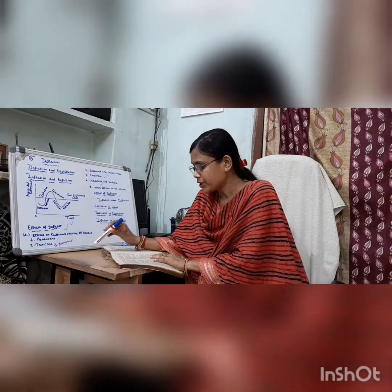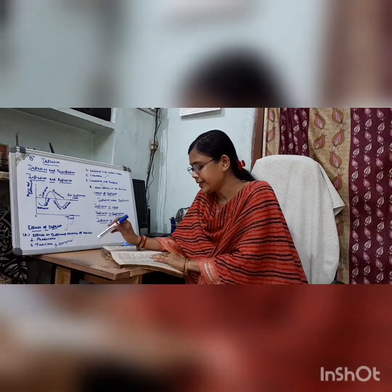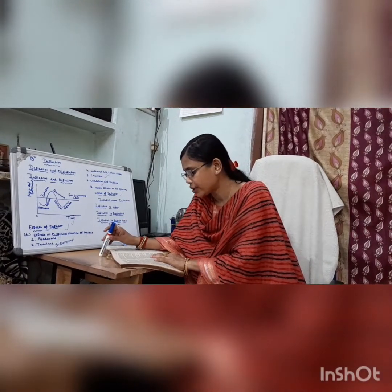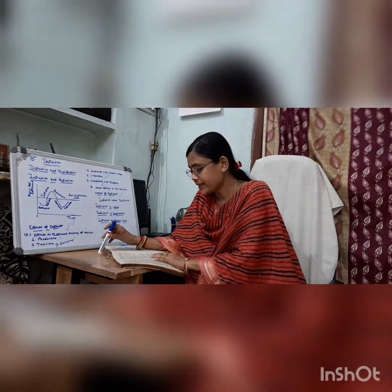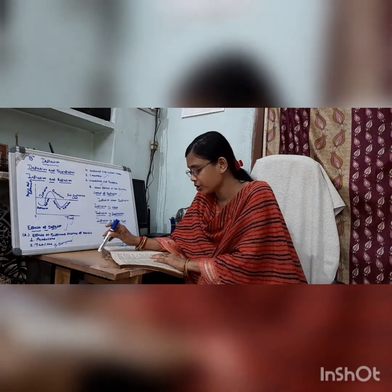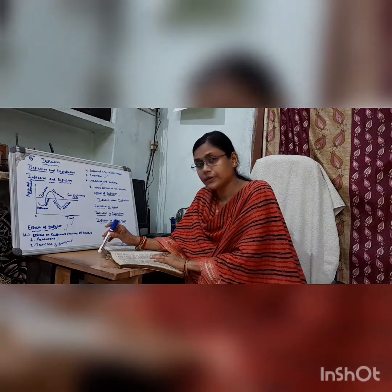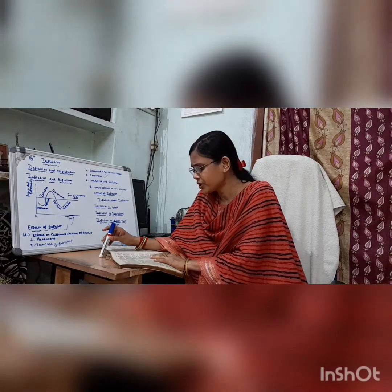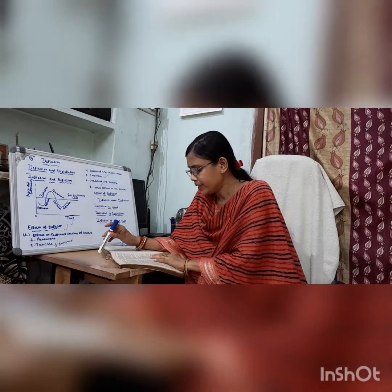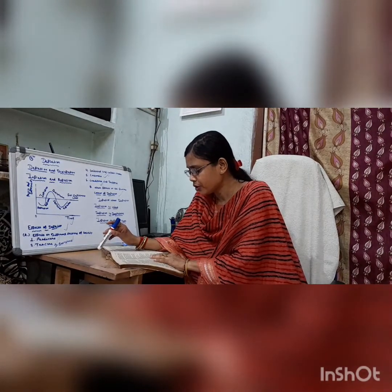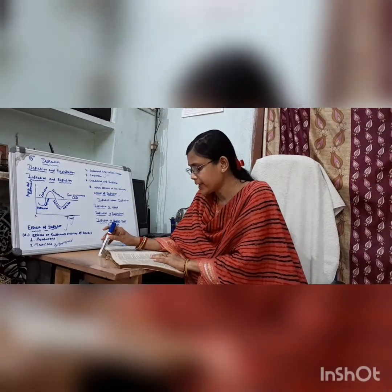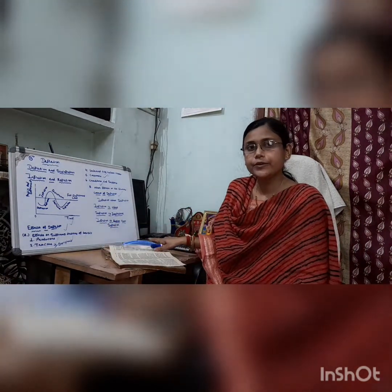Fifth, consumers. Consumers generally gain due to falling prices because the purchasing power of their money rises. Consumers are of two types: consumers whose income remains fixed — that is, salaried persons — will be benefited by depression. Consumers whose income falls during depression — that is, profit earners — may lose during depression.